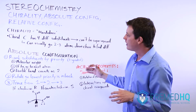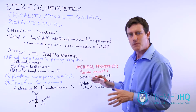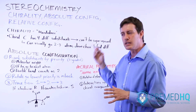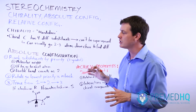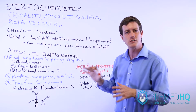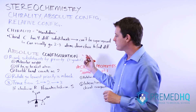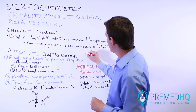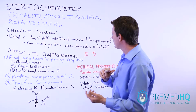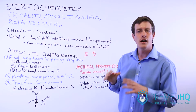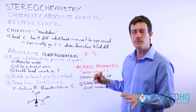That brings us to the topic of absolute configuration. Absolute configuration is a naming convention we use to describe different chiral compounds. It has two possibilities: it's either going to be R or S, which deal with the orientation of the different substituents around that chiral carbon.